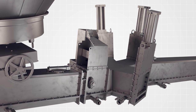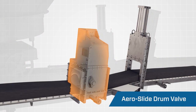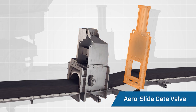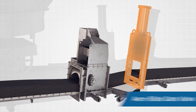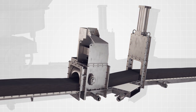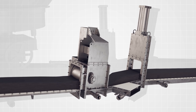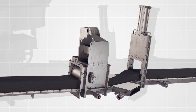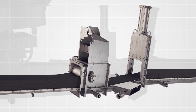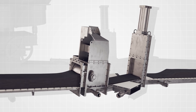Between aero-slide conveyor runs, either an aero-drum valve or an aero-slide gate valve can be used to control flow through the conveyor. The primary difference is an aero-drum valve is well-suited for metering, whereas an aero-slide gate valve is typically used to permit or shut off flow.